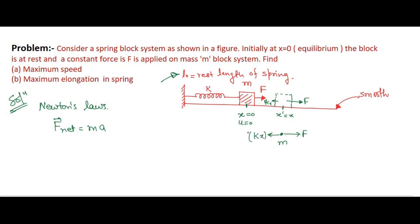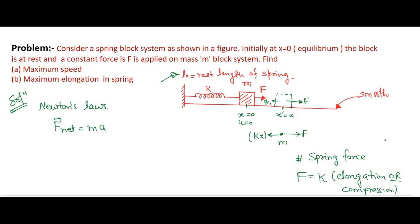I would like to clarify: the spring force is given by k times elongation (or compression). F = kx is not always true — it is only true when x is the elongation or compression. So remember, the spring force is always k times the elongation or compression, not simply kx unless x represents that quantity.